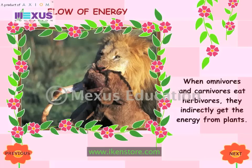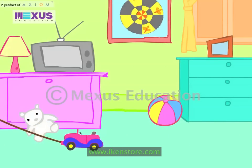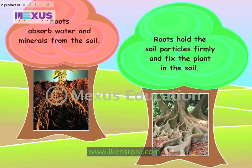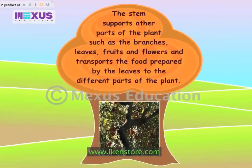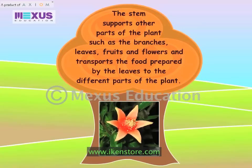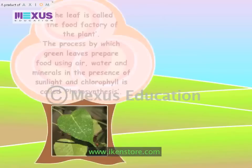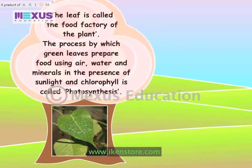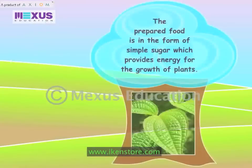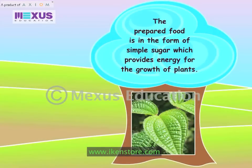Recap: Roots absorb water and minerals from the soil. Roots hold the soil particles firmly and fix the plant in the soil. The stem supports other parts of the plant such as branches, leaves, fruits and flowers, and transports food prepared by the leaves to different parts of the plant. The leaf is called the food factory of the plant. The process by which green leaves prepare food using air, water and minerals in the presence of sunlight and chlorophyll is called photosynthesis. The prepared food is in the form of simple sugar which provides energy for the growth of plants.